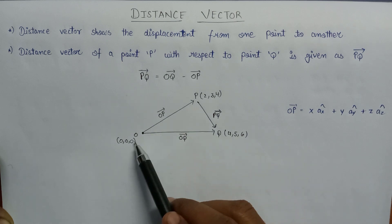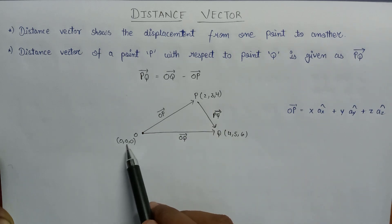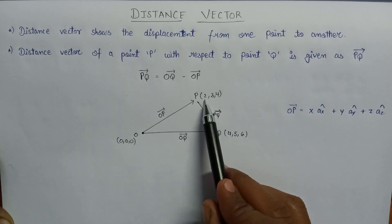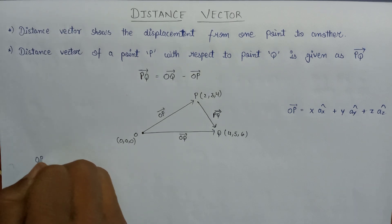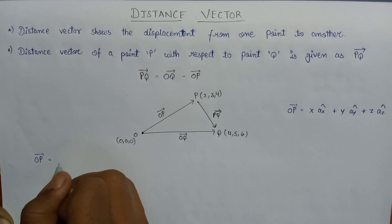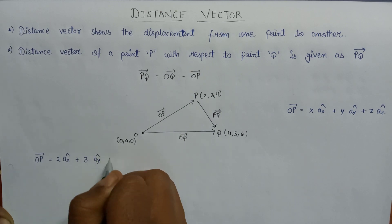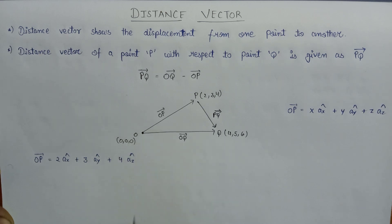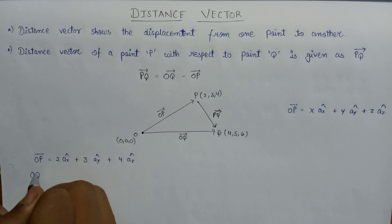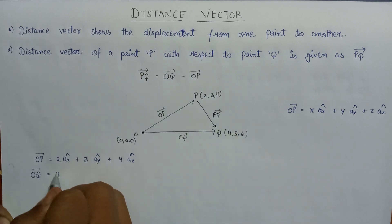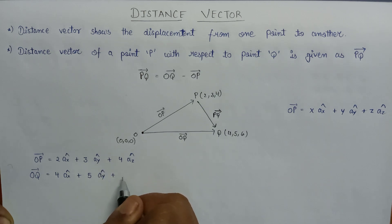Now here is the coordinate for the position vector OP, with origin at 0, 0, 0. Substituting the values of X, Y, and Z, the final expression for OP vector becomes 2·AX cap plus 3·AY cap plus 4·AZ cap. Similarly, the equation for OQ vector becomes 4·AX cap plus 5·AY cap plus 6·AZ cap.